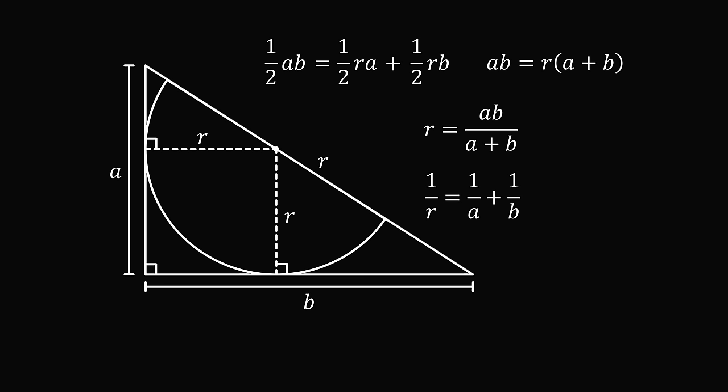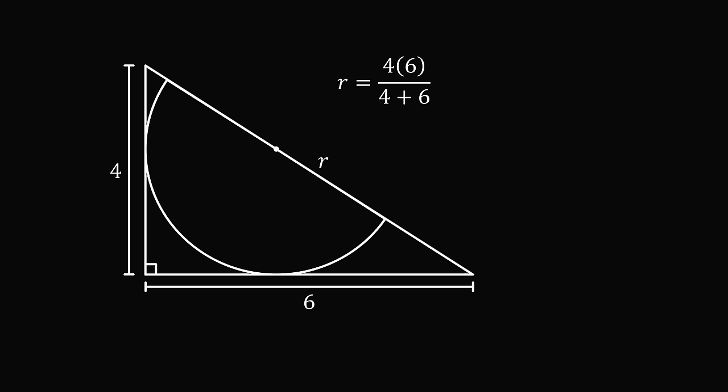So now let's solve the original problem. We had A is equal to 4 and B is equal to 6. So R is equal to 4 times 6 divided by 4 plus 6. This equals 24 over 10, which simplifies to be 12 over 5, which equals 2.4. And that's the answer.